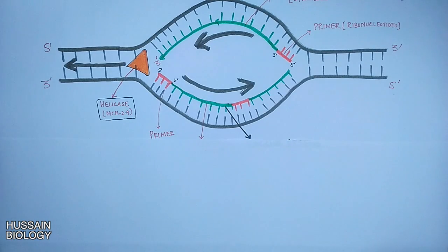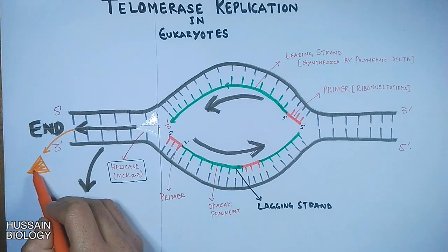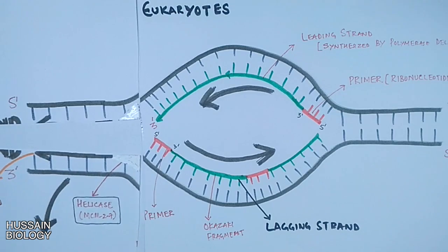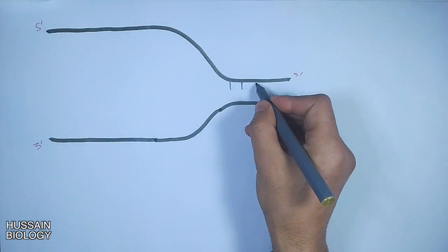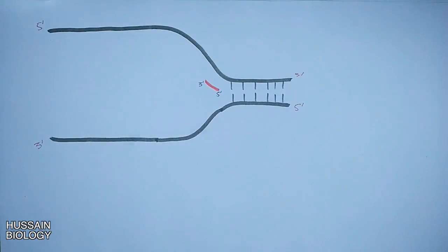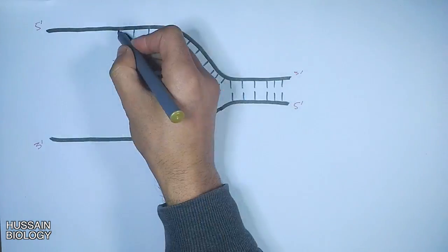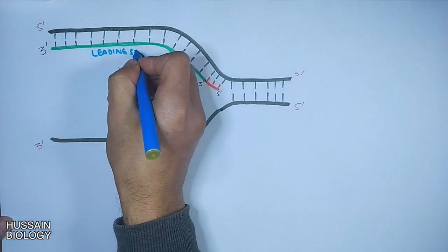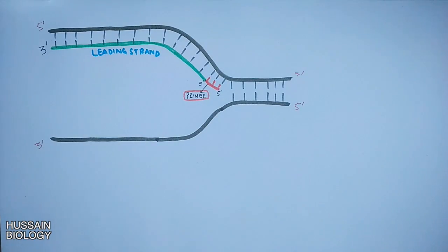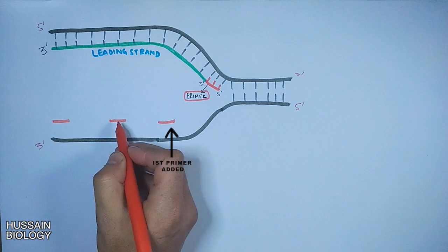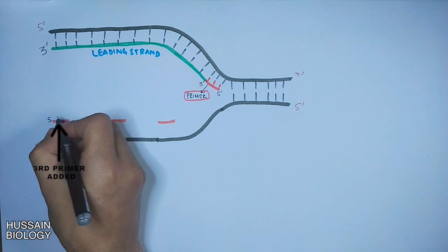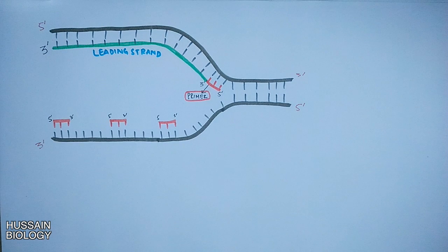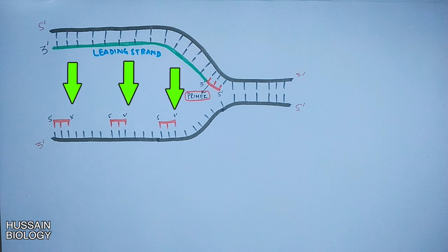What happens next is that the helicase moves to the end of the DNA strands, as shown in the diagram, and unwinds or separates these strands. If we draw it out, we get the DNA strands at the end of DNA replication. The upper strand is continuously synthesized as it always provides a 3' hydroxyl end for polymerase to add nucleotides. On the lower strand, multiple primers are added on the lagging strand as helicase opens the strand, providing these 3' terminus ends shown in the diagram.